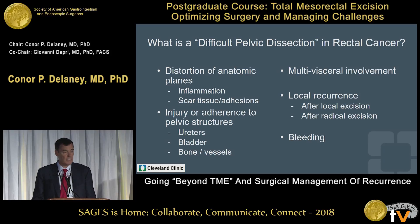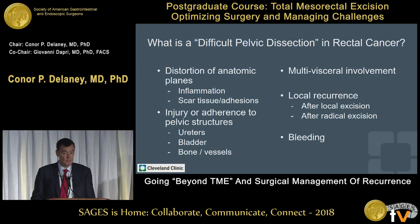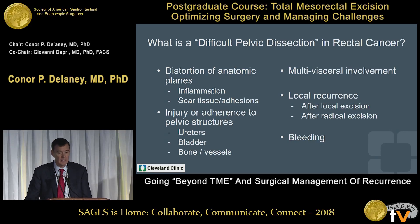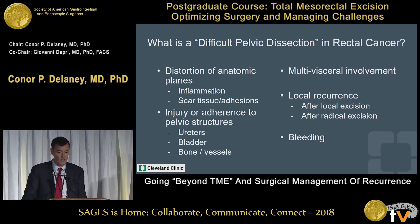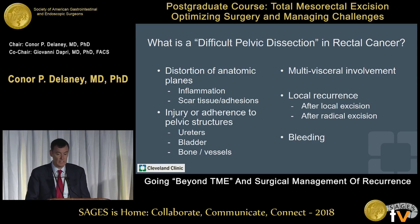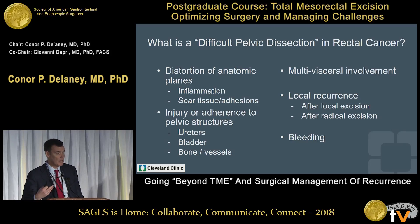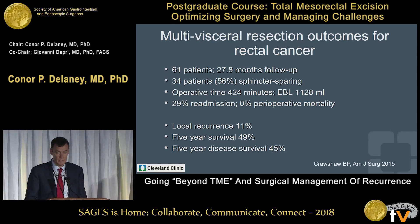What makes dissection difficult? Beyond a narrow male pelvis, there are additional complexities when dealing with recurrent or reoperative cancers: distortion of anatomical planes from inflammation, fibrosis, or scar; prior or current injury or adherence to pelvic structures; multivisceral involvement; and for local recurrence, because it's scar plus tumor, whether it's after local or radical excision.